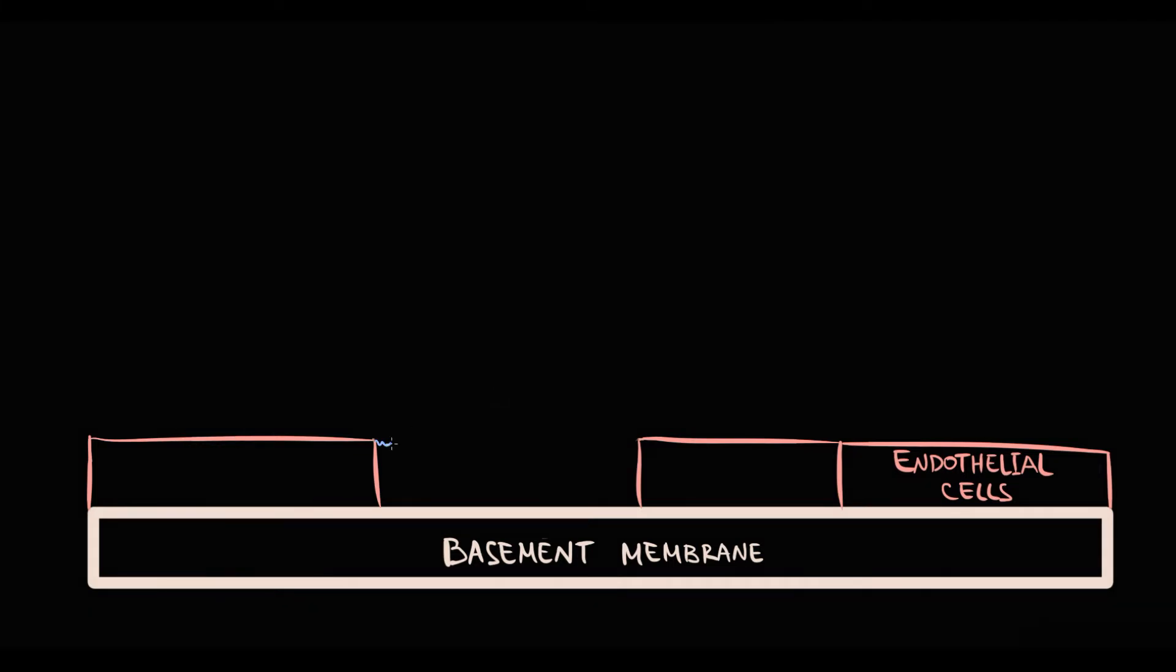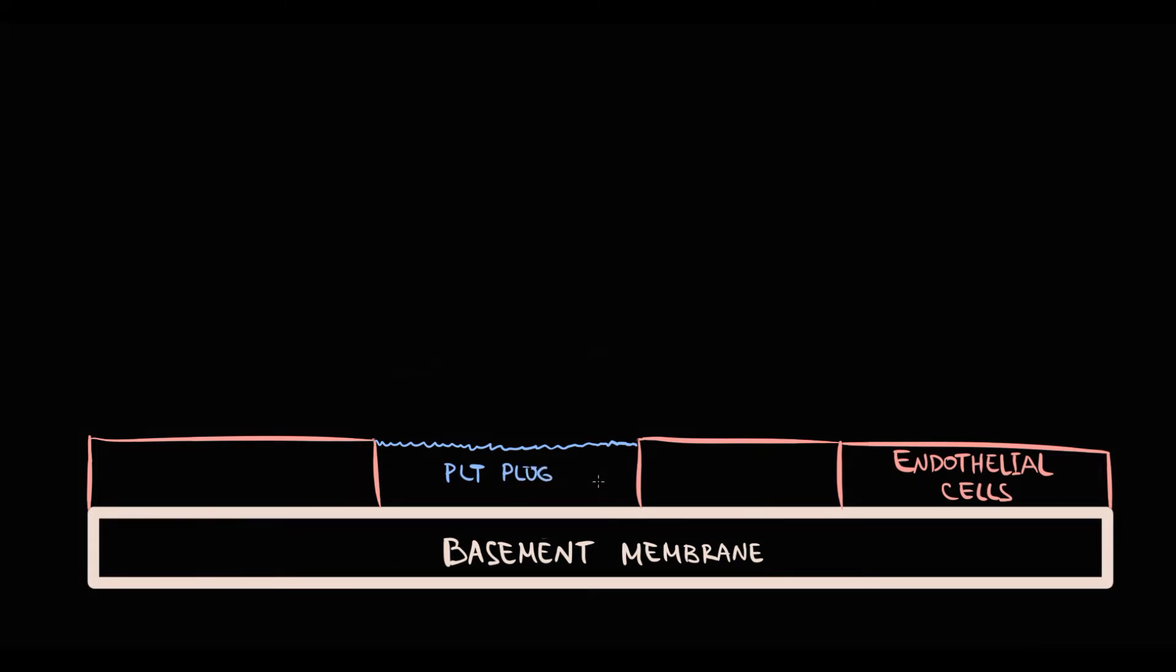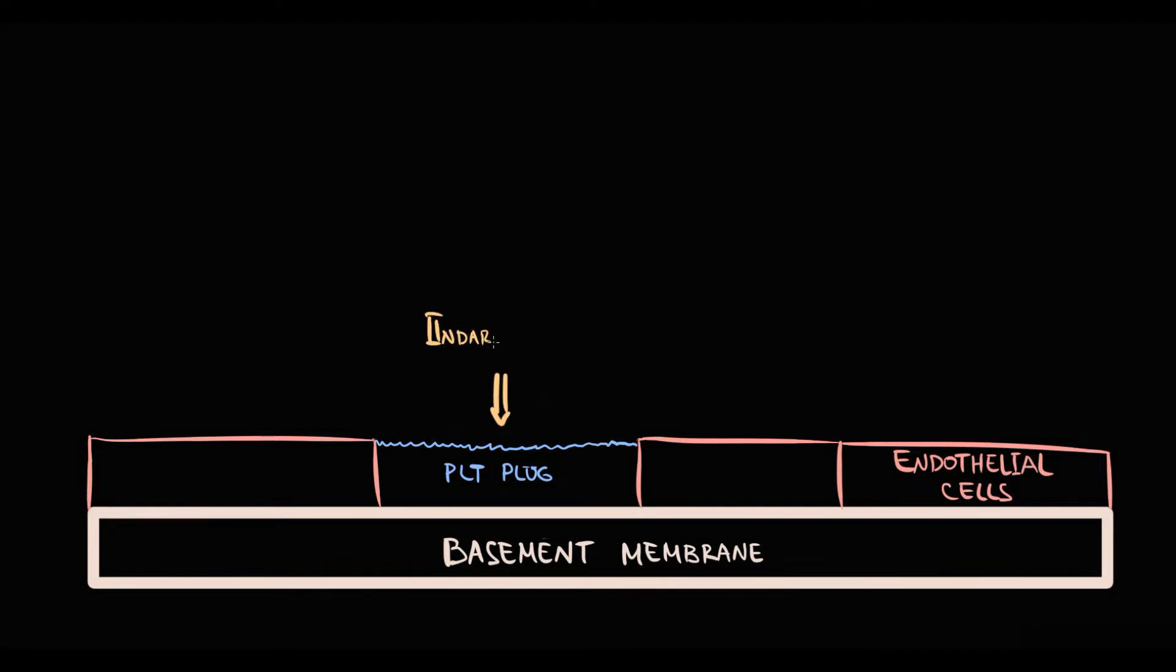Aggregation results in formation of a platelet plug. But the platelet plug is weak, and to stabilize it, to make it formidable, we have secondary hemostasis. The function of secondary hemostasis is to make from the weak platelet plug a formidable structure called a thrombus.